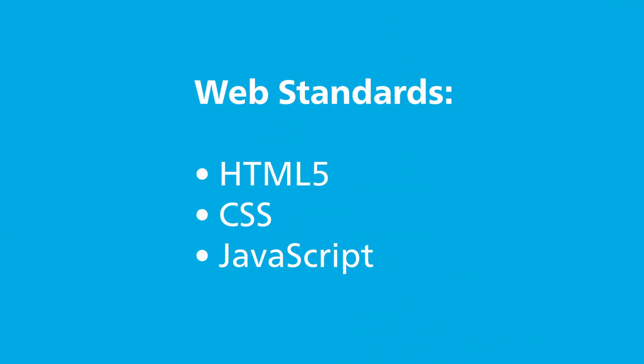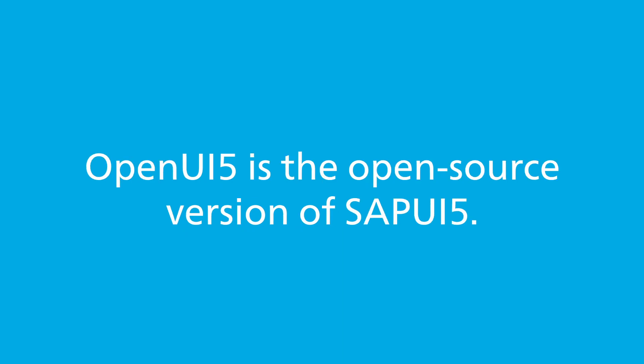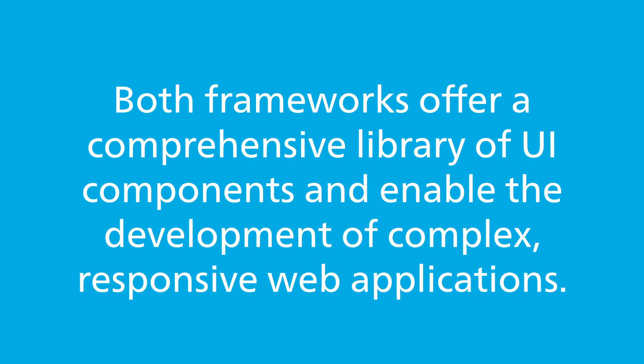SAPUI5 and OpenUI5 are two closely related frameworks based on modern web standards, such as HTML5, CSS, and JavaScript. SAPUI5 is a proprietary solution from SAP that is deeply integrated into the SAP ecosystem and offers commercial support. OpenUI5, on the other hand, is the open-source version of SAPUI5, published under the Apache 2.0 license and can therefore be used and modified outside the SAP ecosystem. Both frameworks offer a comprehensive library of UI components and enable the development of complex, responsive web applications.